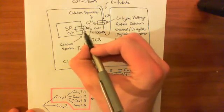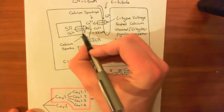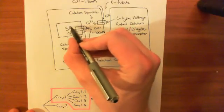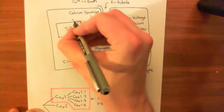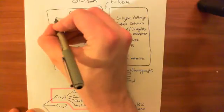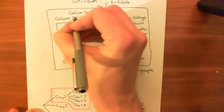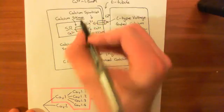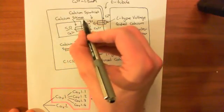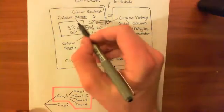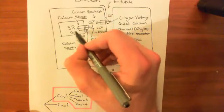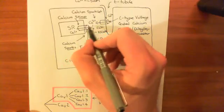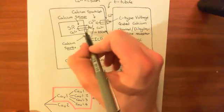On the cytosolic side of the type 2 ryanodine receptor, you get calcium rising. But on the luminal, SR-lumen side of the type 2 ryanodine receptor, you get calcium falling. The falling calcium on the luminal side is what is known as a calcium scrap — notably, 'scrap' is 'spark' with those four letters reversed.